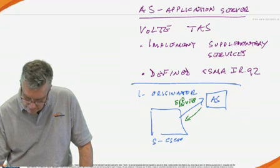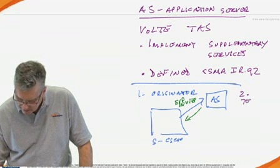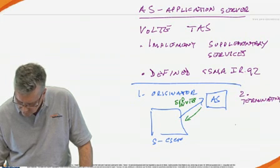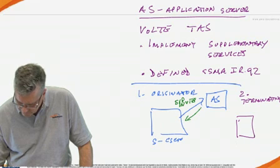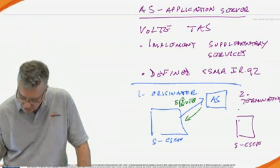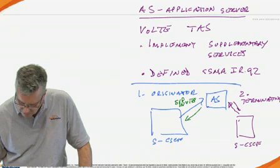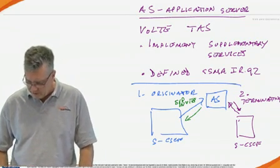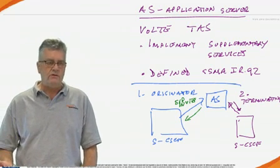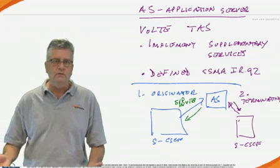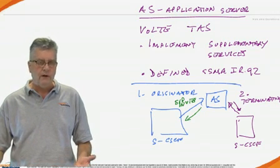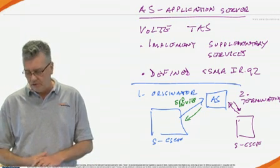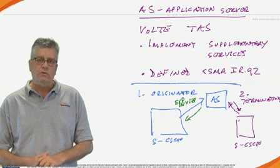Secondly, on the terminating side, when the serving CSCF on the terminating side receives that invite, it is also going to send it to the application server, which could be a different physical box. It doesn't have to be the same one, maybe in a different location, because we're going to do terminating services. For example, I have call forward enabled. I have call forward no answer enabled, what to do in that type of situation. So that's how the application server will come into play as well.